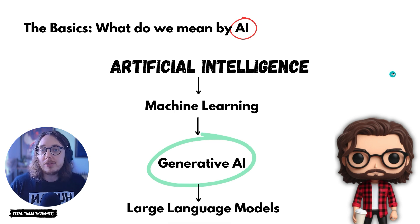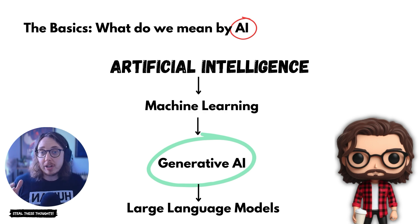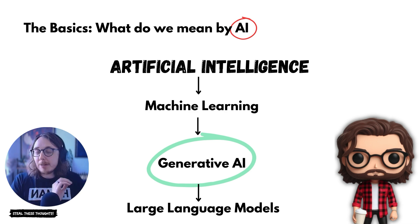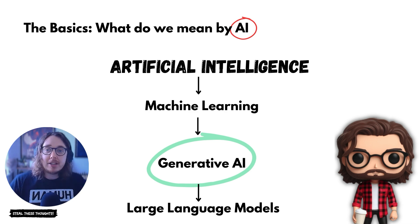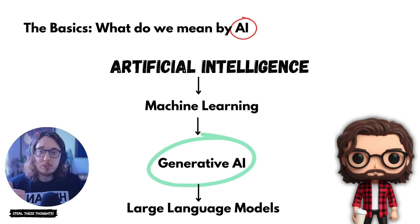One of the technologies out of generative AI are large language models. For those who don't know what large language models are, or LLMs for short, they are ChatGPT, Microsoft Copilot, Perplexity, Google Gemini — all of those conversational AI tools you're using are large language models.